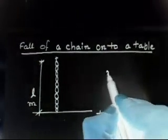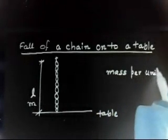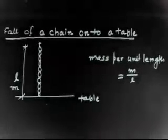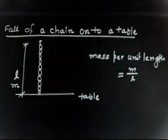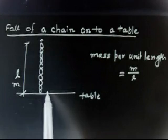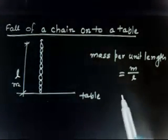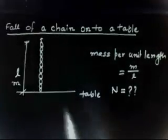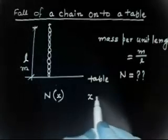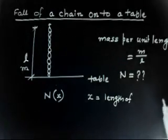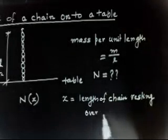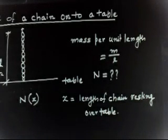Mass per unit length will be M by L, because for length L the mass is M. The question asks us to find the normal reaction by the table as a function of X, where X is the length of chain resting over the table.